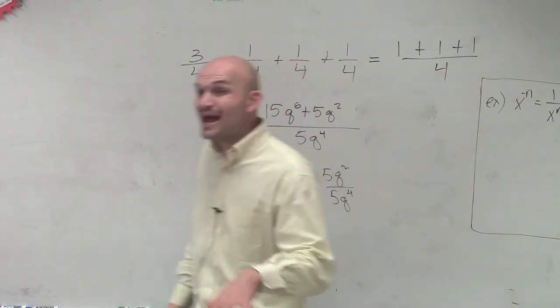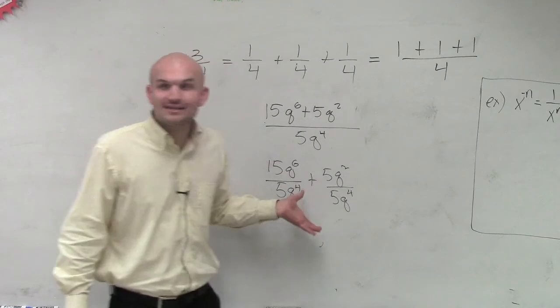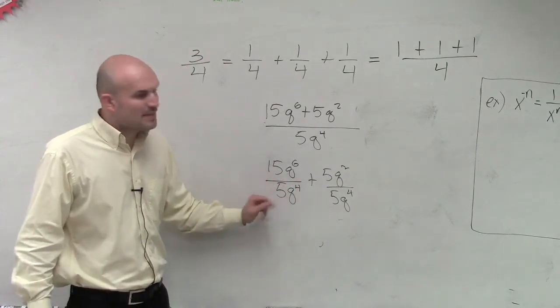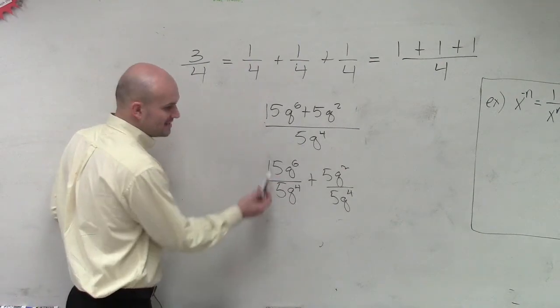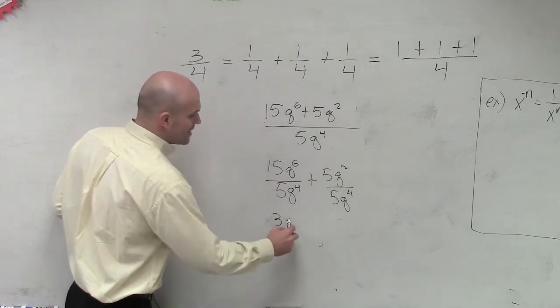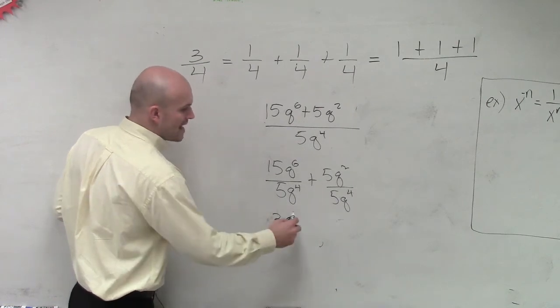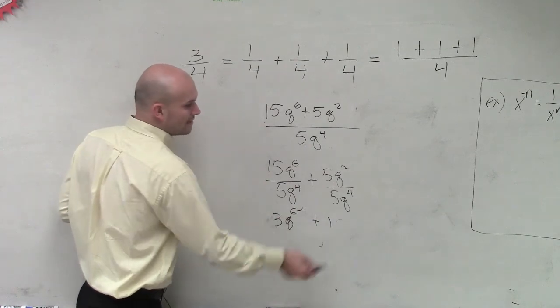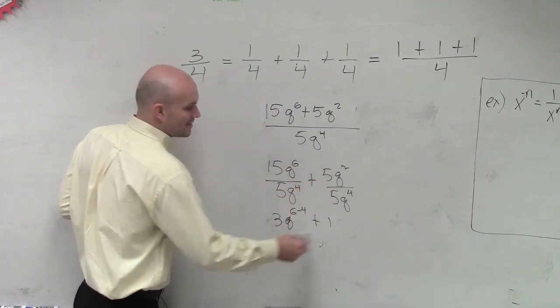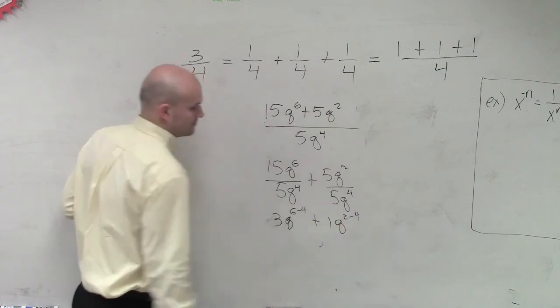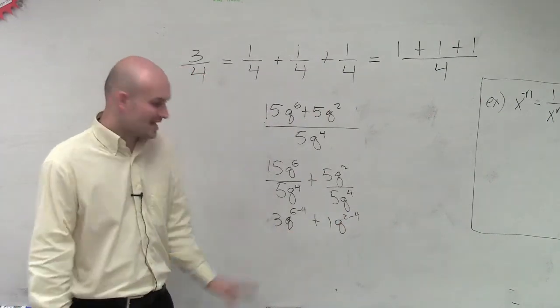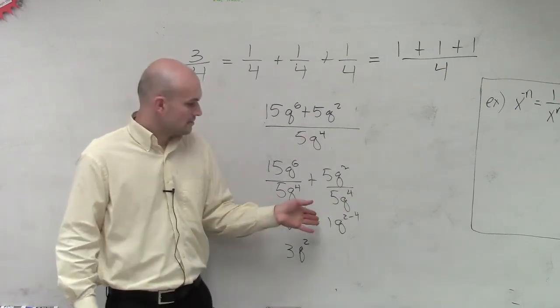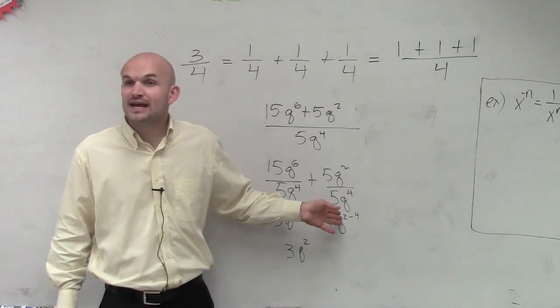Now, what we've practiced is how to divide these by using your rules of exponents, right? So what is 15q to the 6 divided by 5q to the fourth? Well, 15 divided by 5 is 3. Then we have q. Remember, you subtract 6 minus 4. Plus 5 divided by 5 is 1. q to the second divided by q to the fourth. So then our final answer is going to be 3q to the second plus q to the negative second power.